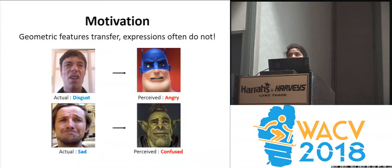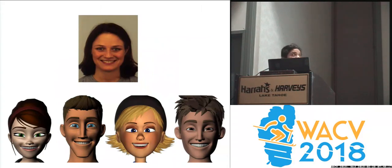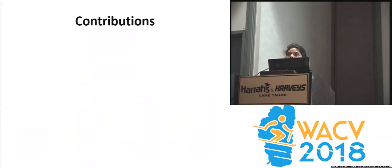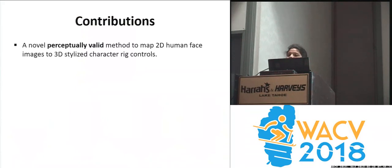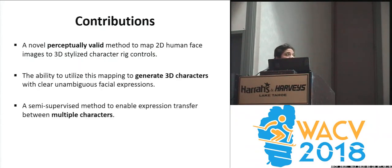Now I'm going to show you some results from our method, which shows the perception of the expression is retained in the transfer when it goes from humans to stylized characters. Here, the human is showing a joyous expression, and we transfer the facial expression, which is joy, to multiple stylized characters. The contributions of our work are a perceptually valid method to map 2D human face images to 3D stylized control parameters, to drive a 3D rig, and to generalize this method to enable facial expression transfer to multiple characters.